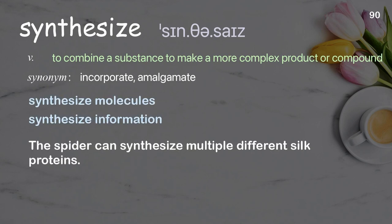Examples: Synthesize molecules. Synthesize information. The spider has the ability to synthesize multiple different silk proteins.